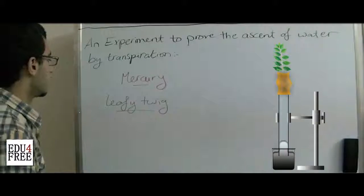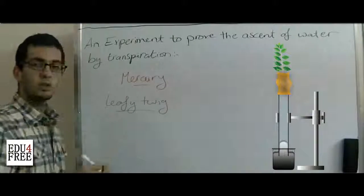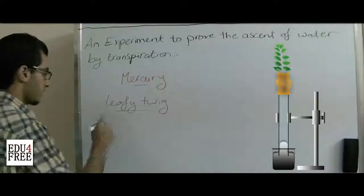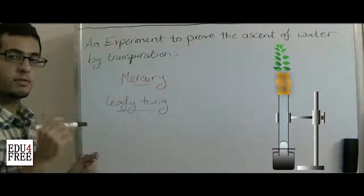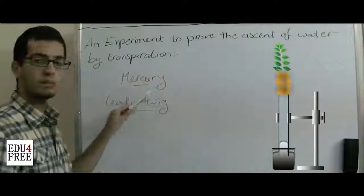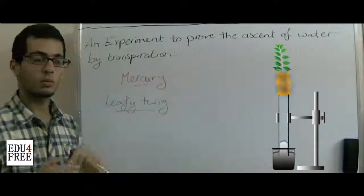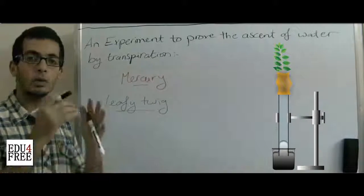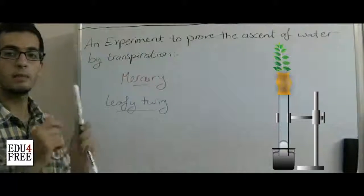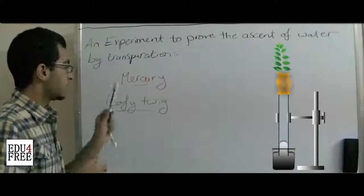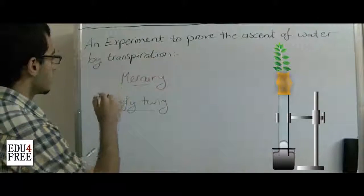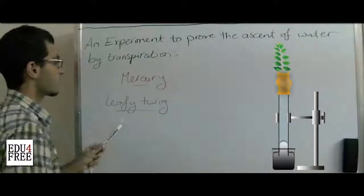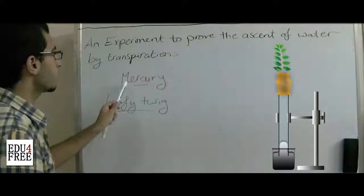The first end of the tube will have the leafy twig. The other end of the tube will be immersed in a beaker containing mercury. Before inserting the tube into the mercury, it will be filled with water. We will immerse it inside a beaker containing mercury, so a part of the mercury will enter into the tube, and we will record the mercury level before beginning our experiment.